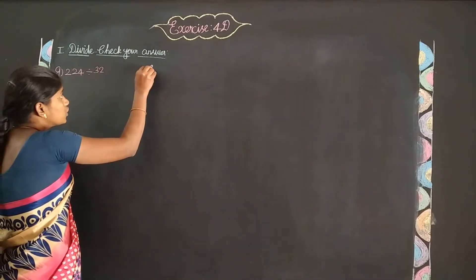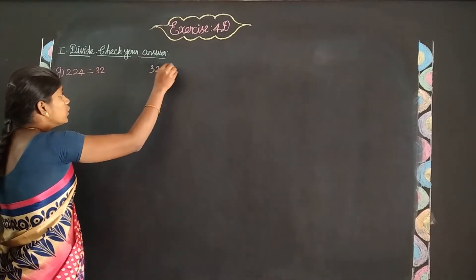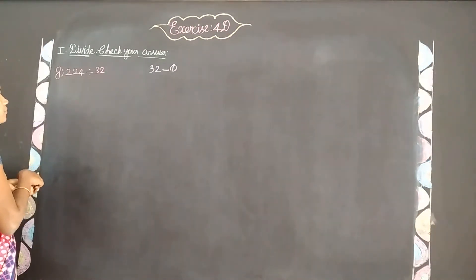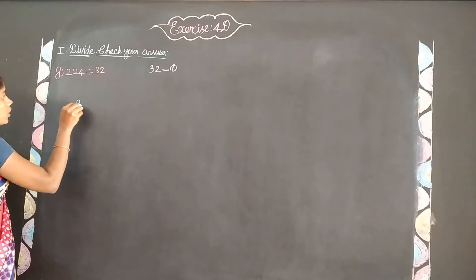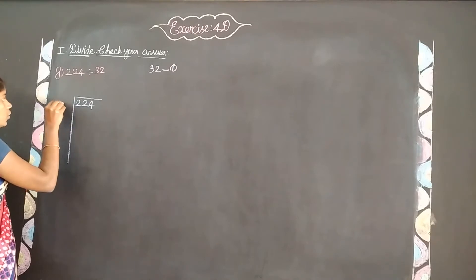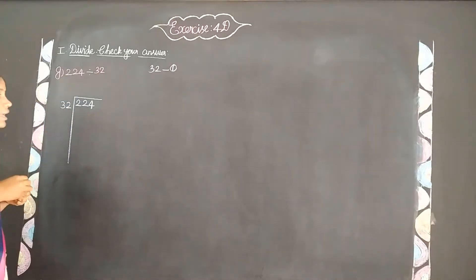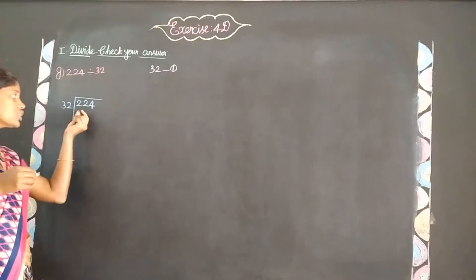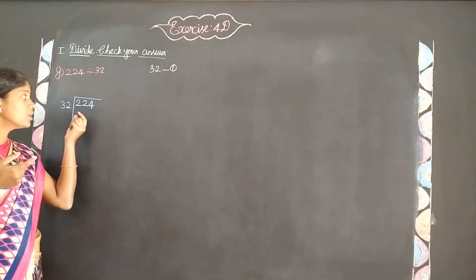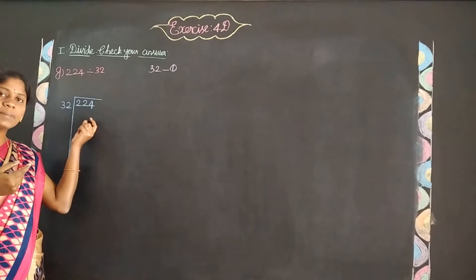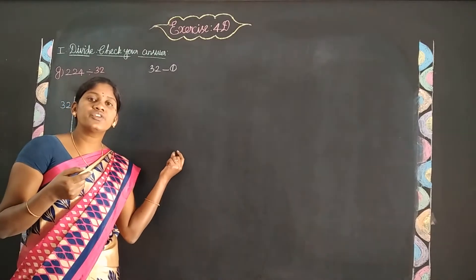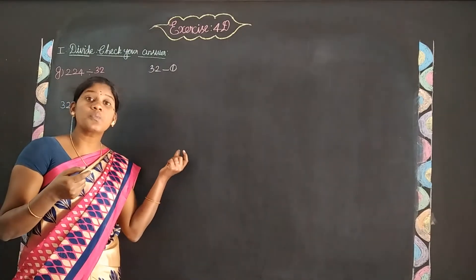The number is 224. We need to divide 224 by 32. Since 32 is the smallest number and larger than the first two digits, we take the three-digit number 224. Now let's write the 32 times table.